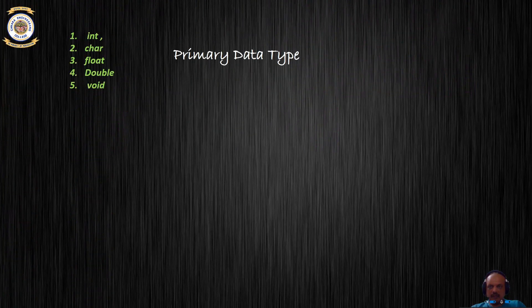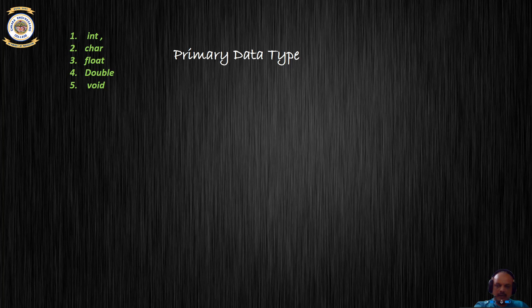In C we have basically five primary data types. The int which stands for integer data type, the char which stands for character data type, float stands for floating point data type or decimal numbers, double is also a decimal number but with greater precision, and then we have void or the null data type.